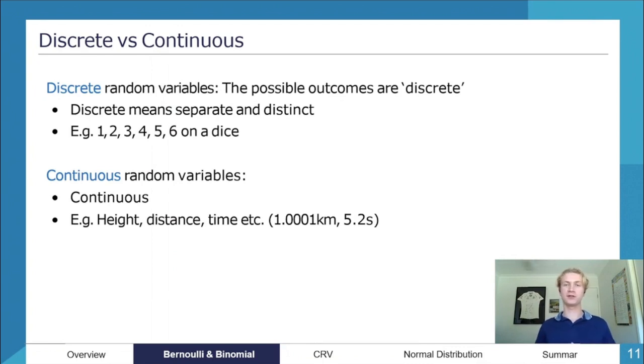Discrete random variables: the possible outcomes for these variables are discrete. What does that actually mean? They're separate and distinct. There is no spectrum or something like that, it is just set numbers. For example, one, two, three, four, five, and six on a dice.